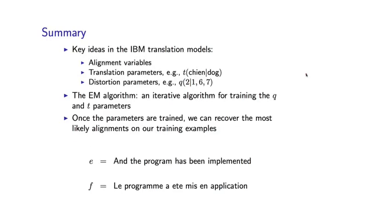So finally, to summarize, some key ideas we saw in the IBM translation models. Really, the single key idea was to induce these alignment variables, specifying how words in one language are aligned to words in another language.